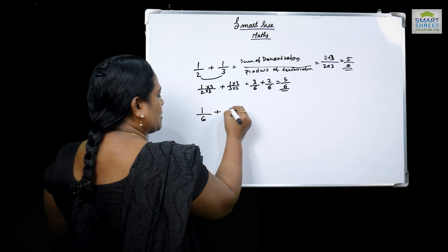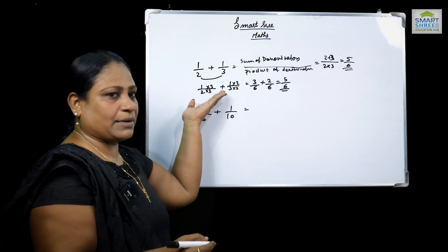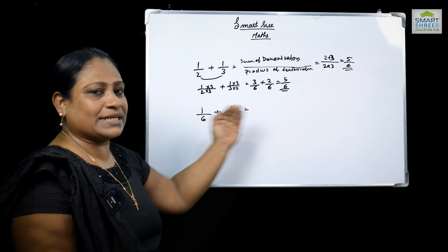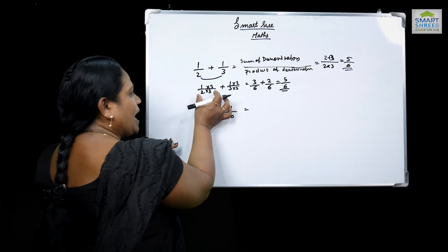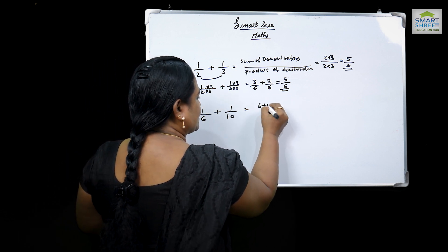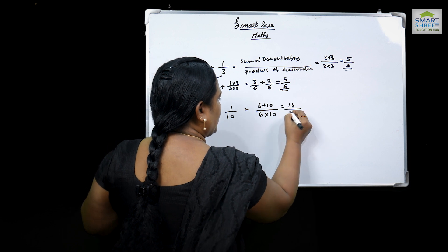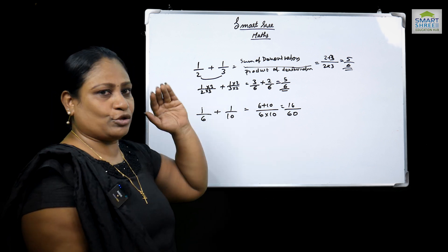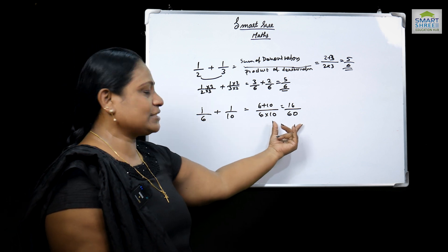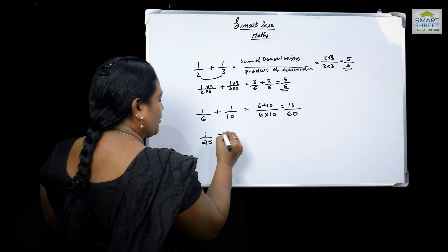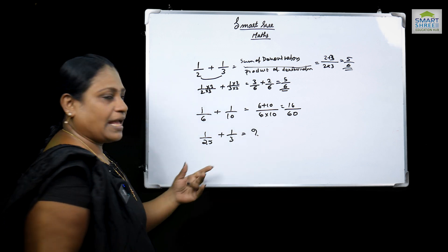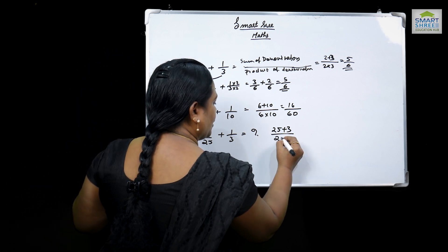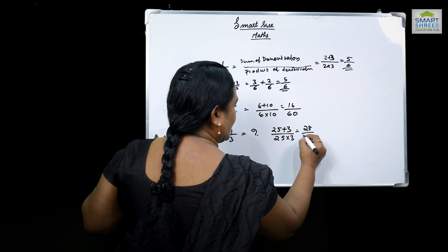For example, 1 by 6 plus 1 by 10 — why are we doing that? We take four steps for time-saving in competitive exams. The denominator sum is 6 plus 10 and the product is 6 into 10, giving 16 by 60. We can use this in our head without pen or pencil. Similarly, 1 by 25 plus 1 by 3: what is the answer? 25 plus 3 by 25 into 3 gives 28 by 75.